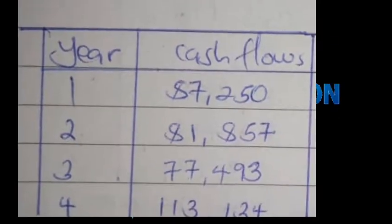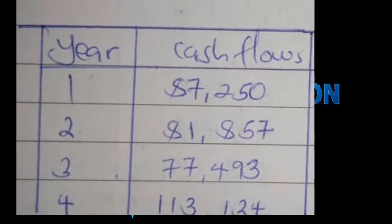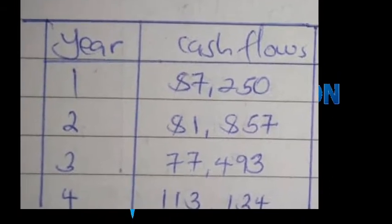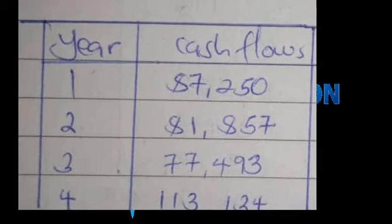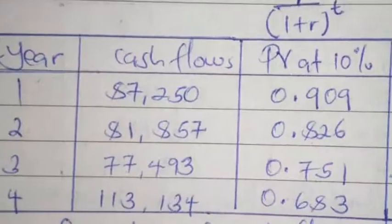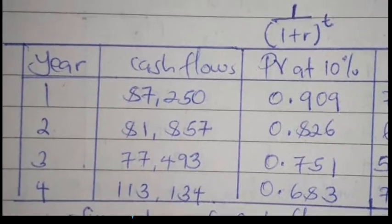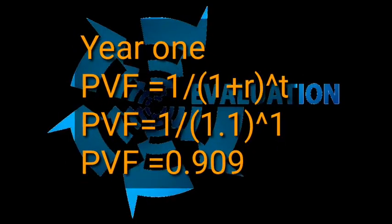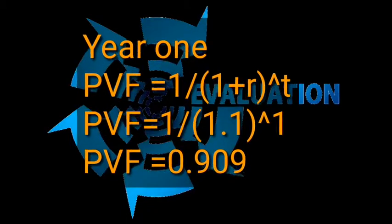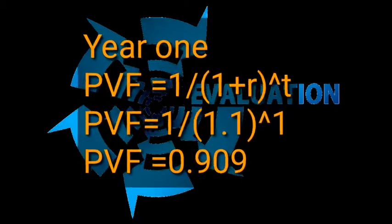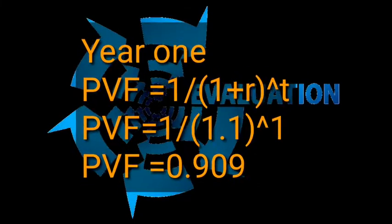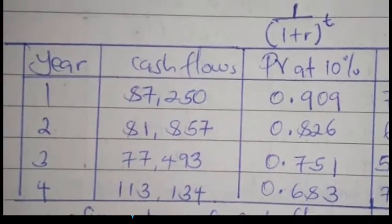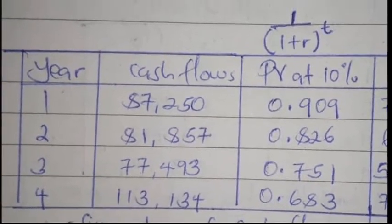To calculate NPV at 10%, we draw a table with a column of years from Year 1 to Year 4, a column of cash flows as given in the question, and another column of present value interest factor at 10%. You can calculate it manually or use present value tables. The formula is: 1 / (1 + r)^t. For Year 1, the present value interest factor is 0.909. We indicate these present value factors for all the years in the table.